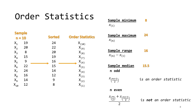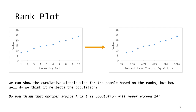From the order statistics, you can compute the range, which is always x sub n minus x sub 1. For this sample, it is 16. One note is about the sample median. When n is an odd number, the sample median is an order statistic, meaning the median corresponds directly to one of the observations in the sample, and can be found by looking at the x sub (n+1)/2 order statistic. When n is an even number, as in this sample, the sample median is not an order statistic, but is an average of two order statistics.